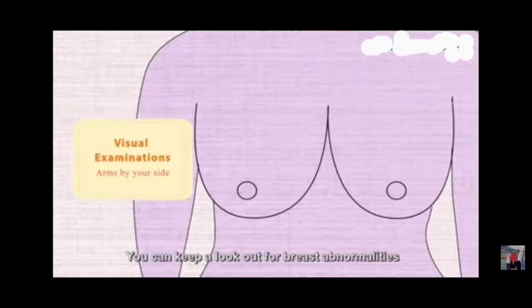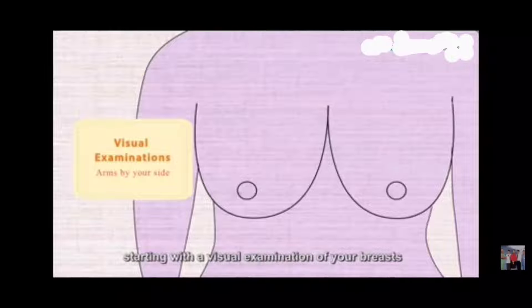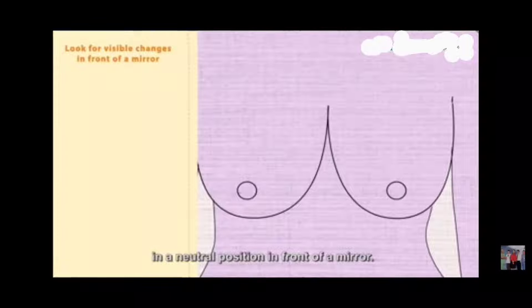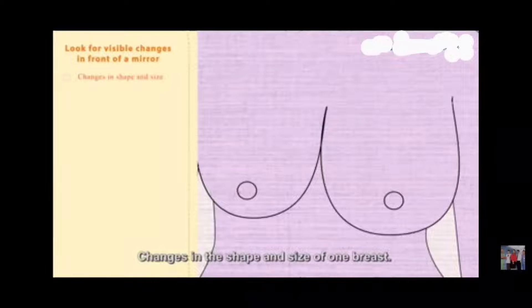You can keep a lookout for breast abnormalities. Starting with a visual examination of your breast with your arms by your side in a neutral position in front of a mirror, look for any of the following.